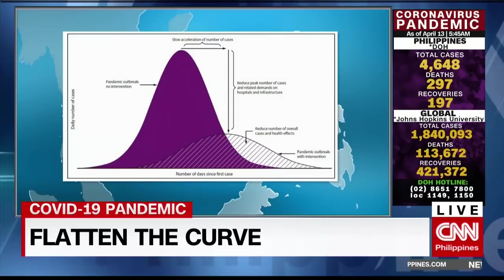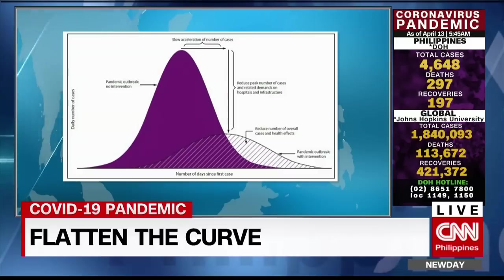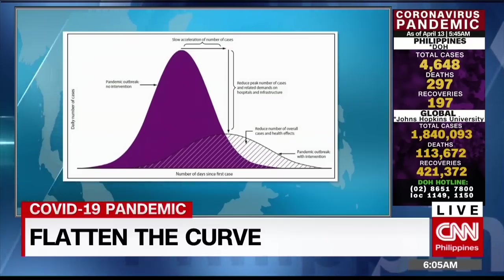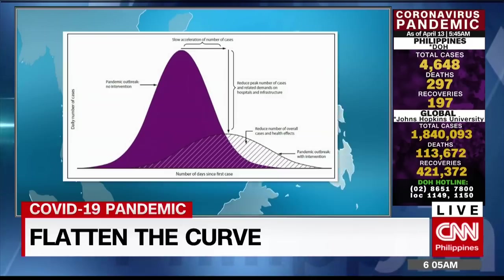The difference between those two curves is the capacity of our health care system to respond to the virus. And if we have too many sick people showing up on the same day, then that means there's not enough beds in the hospital, not enough ventilators to provide support for people.